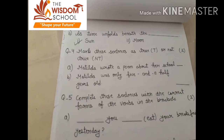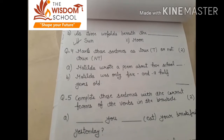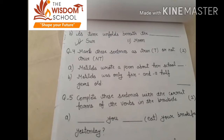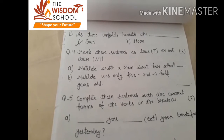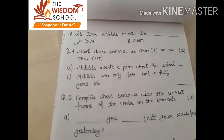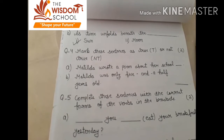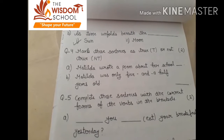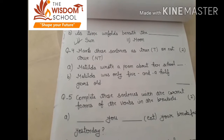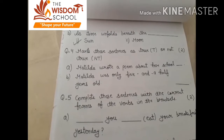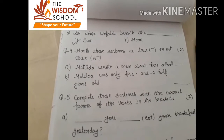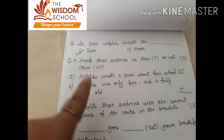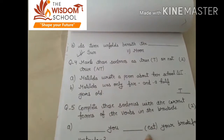Fourth, mark these sentences as true or not true. Matilda wrote a poem about her school. Matilda was only five and a half years old — yes, true. So your answer will be: A — not true, and B — true.